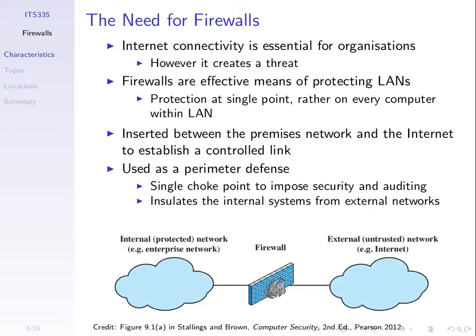The firewall is usually inserted between our internal network and some external network, so it acts as a perimeter defense — protecting the outside of our network. All data from outside coming in goes by the firewall so the firewall can check it, and similarly in the opposite direction. We say it's a single choke point — everything goes via that device — meaning we can implement security policies about what can come in and out, and also auditing, which is accounting and checking that what we're doing is correct.